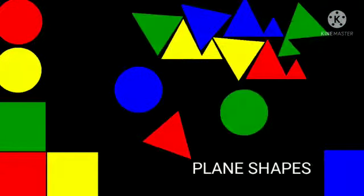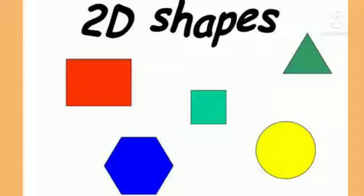A plane shape has sides and corners, also known as 2D shapes, i.e. 2 dimensional shapes.